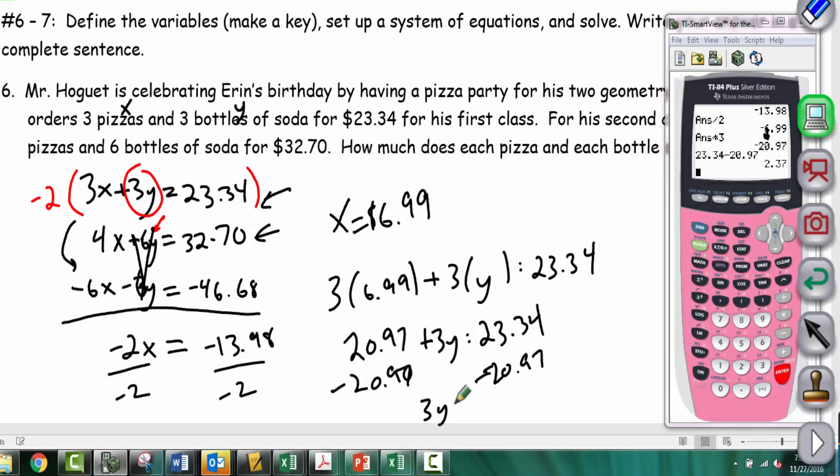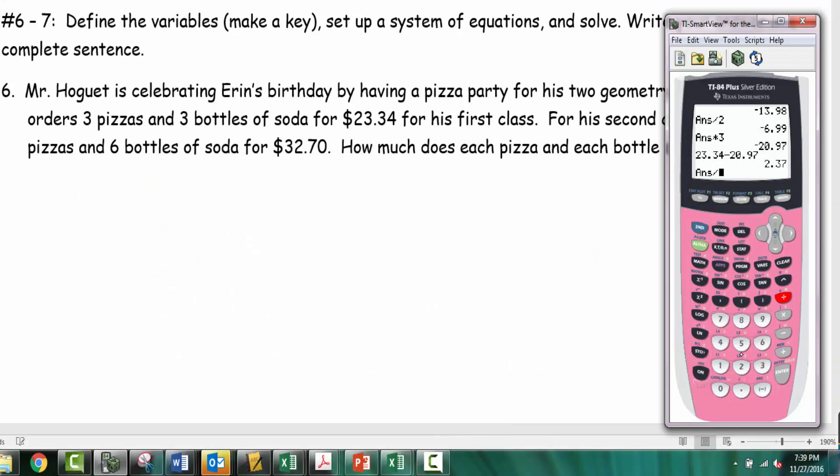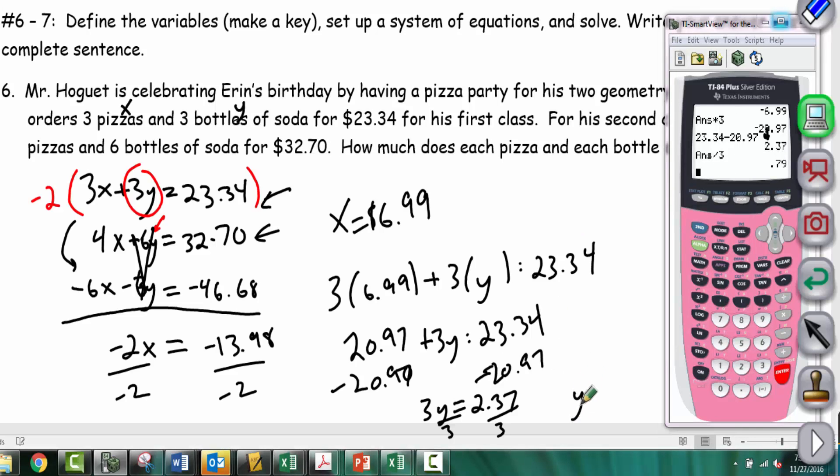That gives us 2.37. So 3y = 2.37, and dividing by 3 gives us 0.79. Each bottle of soda costs 79 cents.